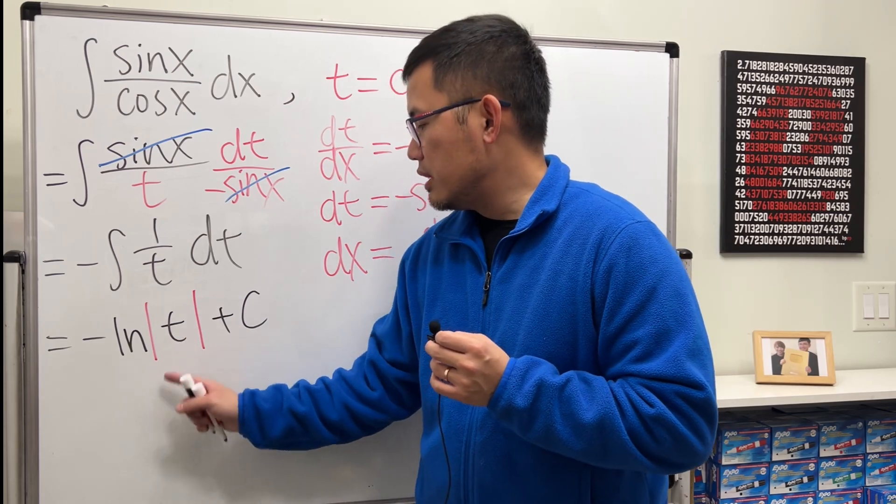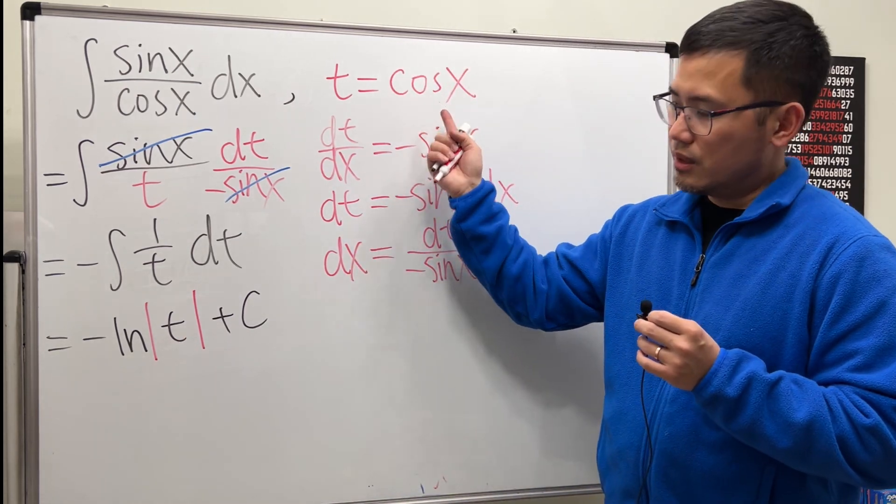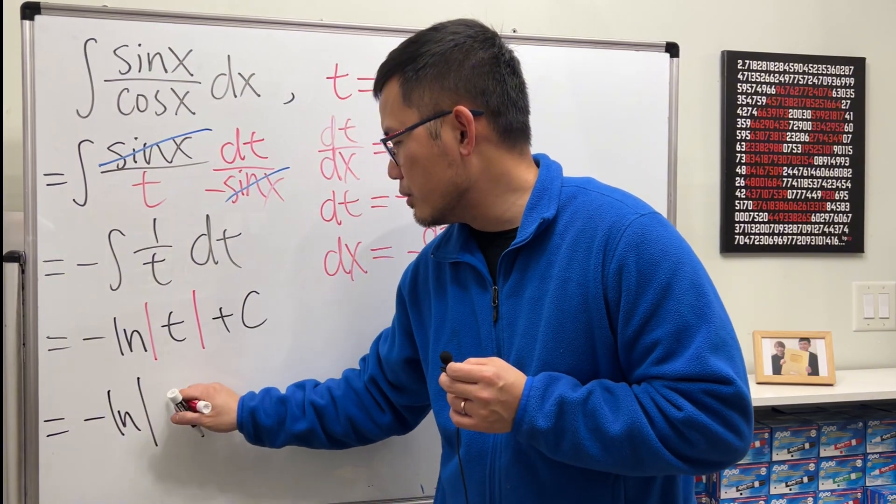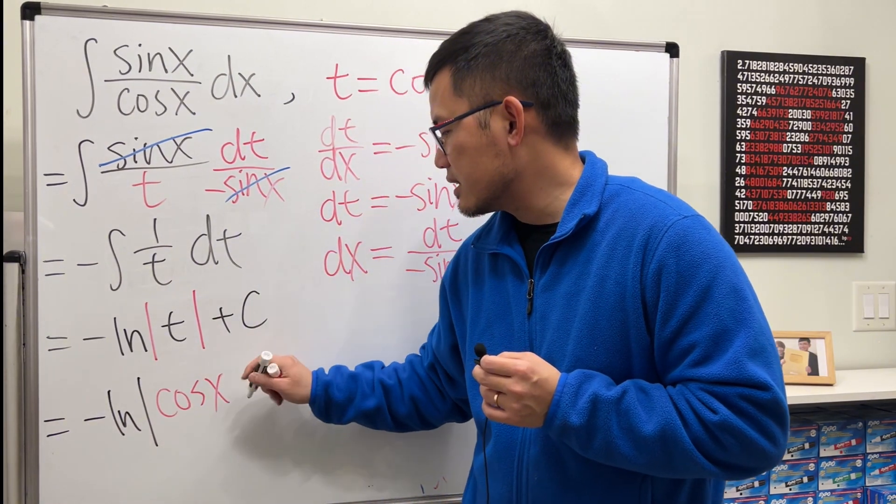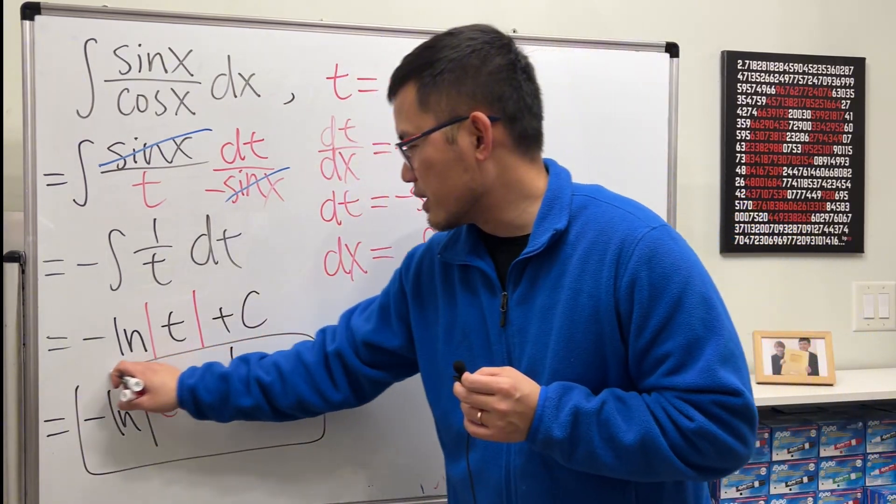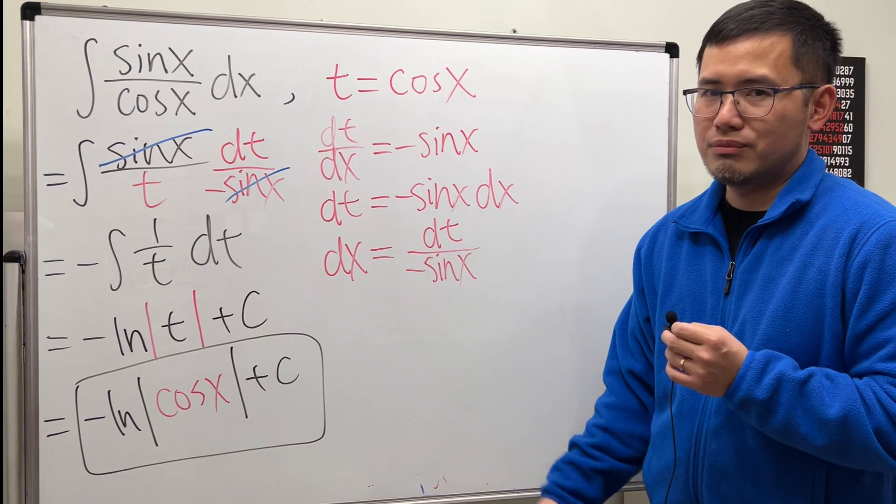We're almost done though. t is what? Cosine x. Put that back. We get negative ln absolute value of cosine x and then plus c. And you can box this for the answer. That's it.